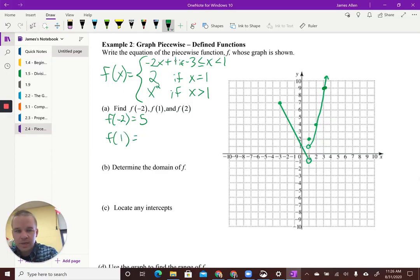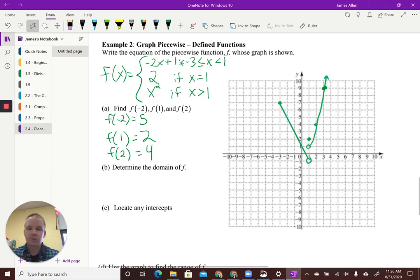All righty. f of 1. Well, where is that going to happen on my graph? That's right here. So, boom, 2. And if I have f of 2, that's going to be right here, which has the point 4. Great. So you'd use the equation, the piecewise function equation. We can use the graph. We can use both. It's good to be good at both.